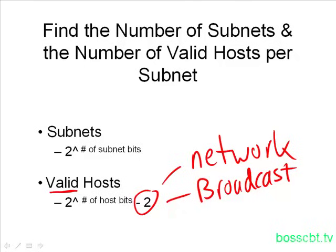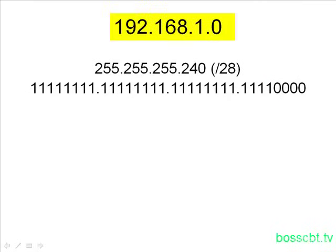All right, so let's run through a few examples. We're going to look at this network number 192.168.1.0, and we're going to subnet it by applying the subnet mask 255.255.255.240.